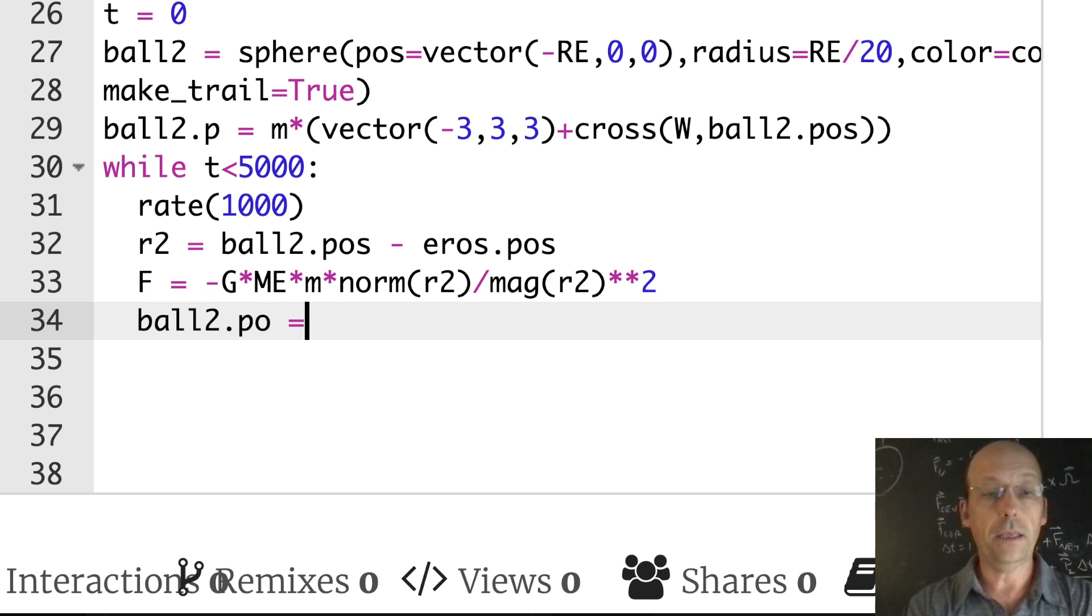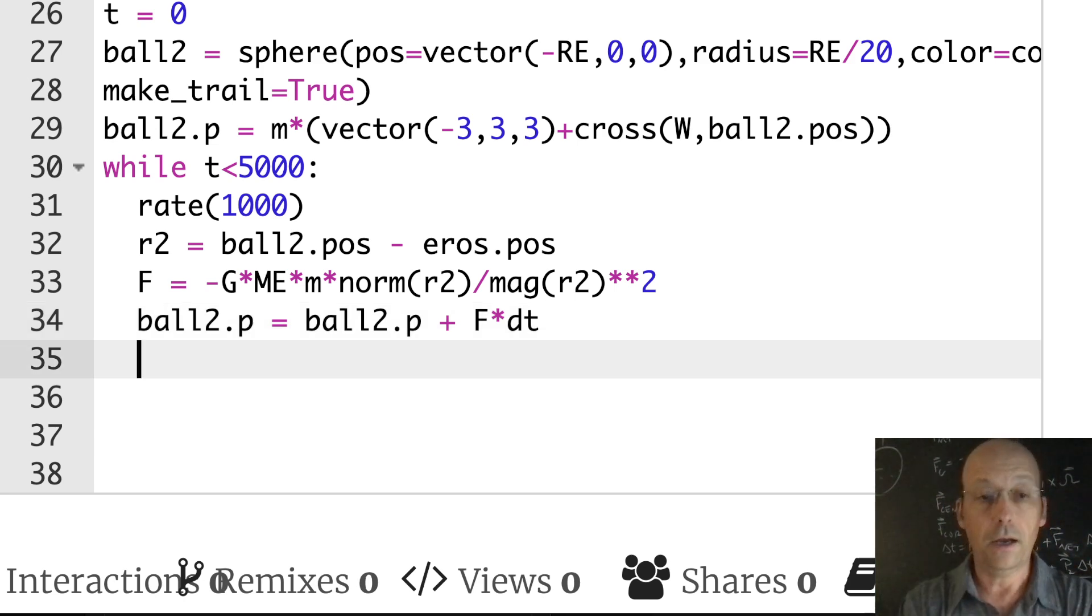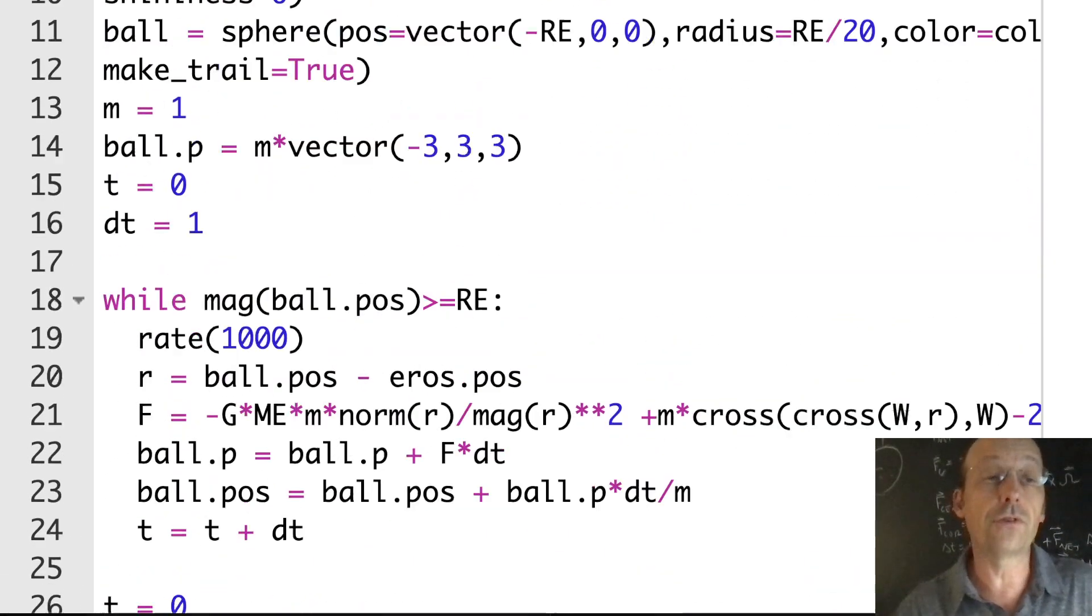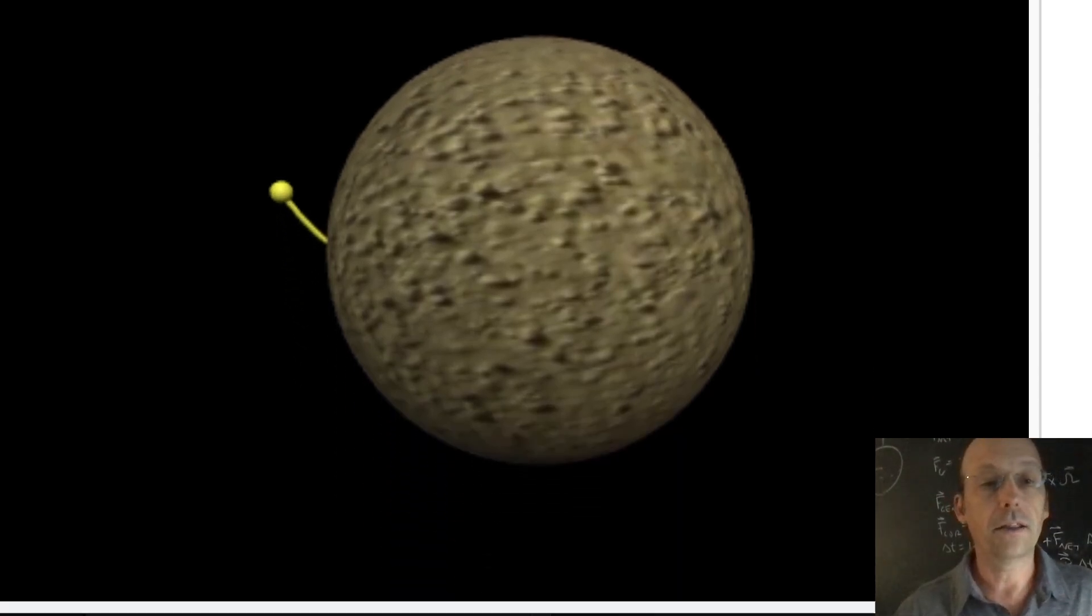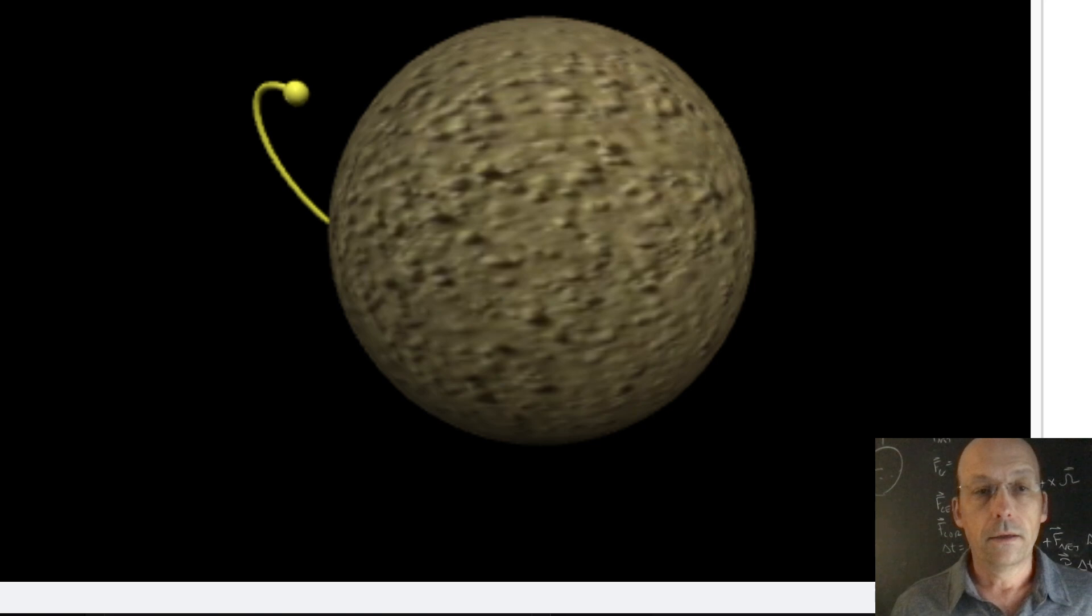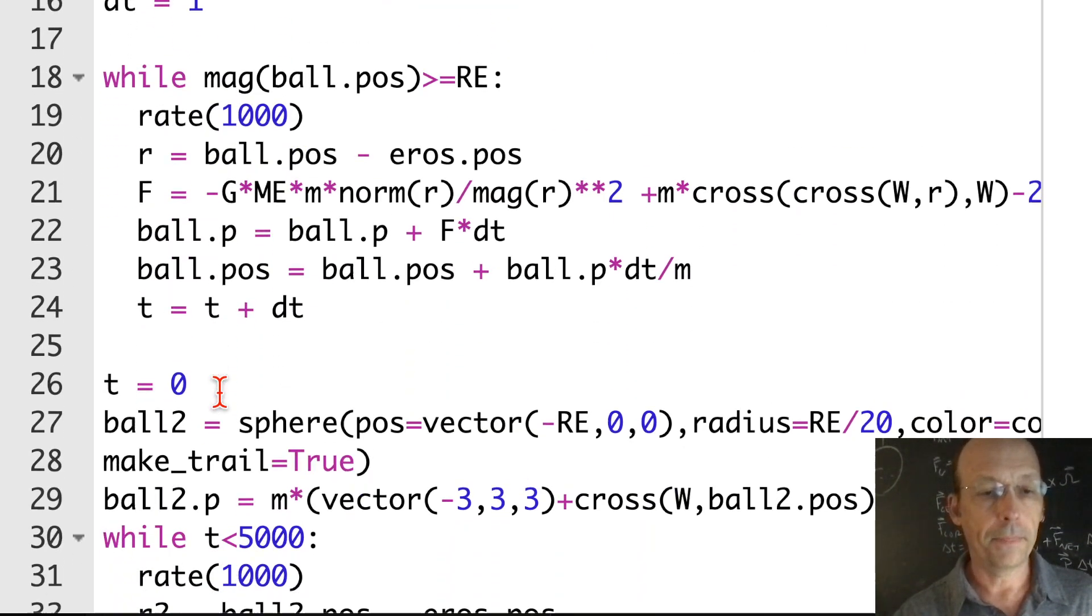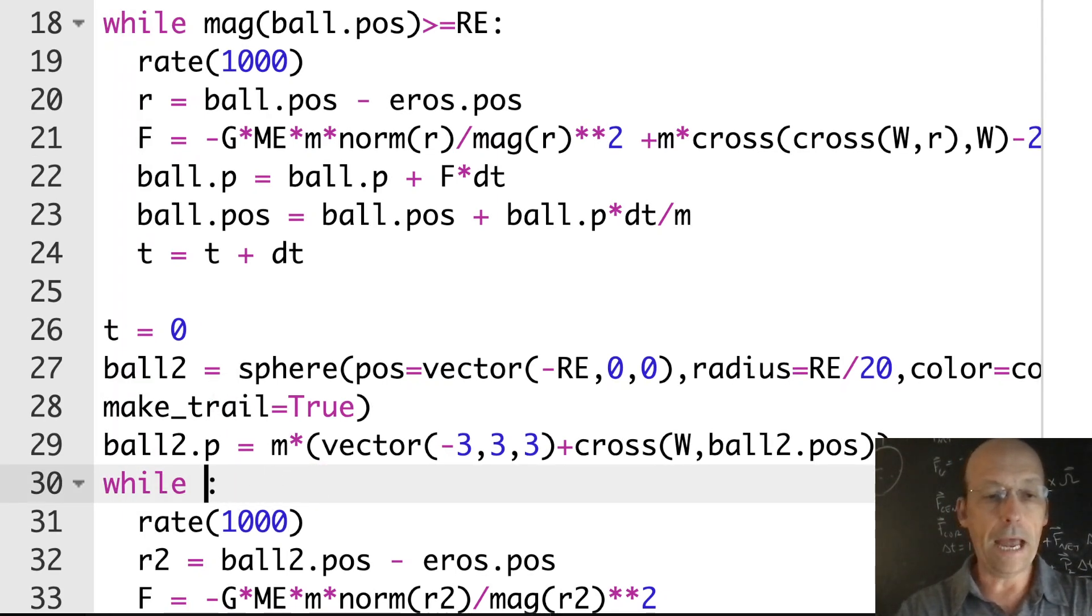Now I can update the momentum. Ball two dot p equals ball two dot p plus f times dt. And I did reuse that variable F, it's fine. Then I'm going to update the position: ball two dot pos equals ball two dot pos plus ball two dot p times dt divided by m. Update time: t equals t plus dt. Let's run it. Now it's going to do two calculations. It's going to use the same 3D set. Here's that first one with the fake forces. And then here's my other one. It's going to land in a different place because they're not the same frames.